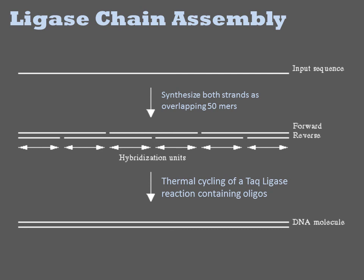Through cycling of the reaction through iterations of denaturation, annealing, and ligation at elevated temperatures, the individual nicks between the junctions of the oligos are sealed, resulting in the full-length synthon as a contiguous double-stranded product.